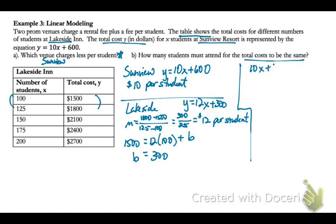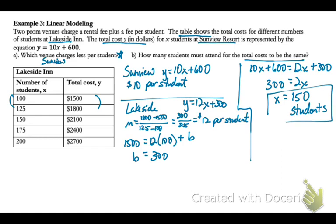Now to find when the cost would be the same, when you hear same in math, that means equal. So we can just set those two equations that represent those two situations equal to each other and solve, which you can see I'm doing on your screen. So the number of students would be 150. If you had 150 students, then the cost would be the same. And then any more, one venue would be cheaper. Any less, the other venue would be cheaper.